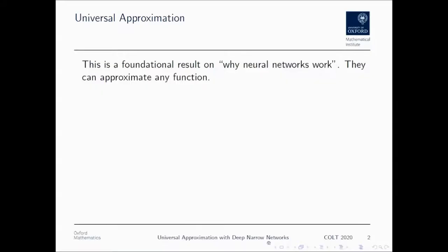Hello everyone. Universal approximation is a foundational result on why neural networks work. Informally speaking, it essentially states that neural networks can approximate any function.